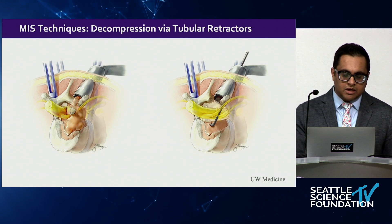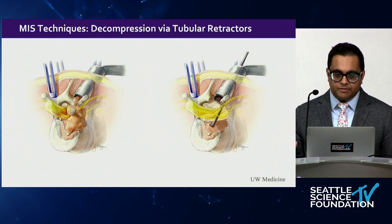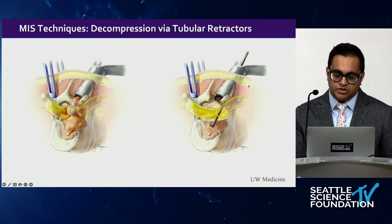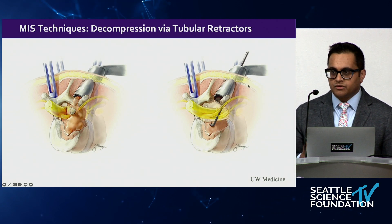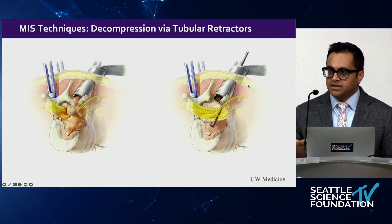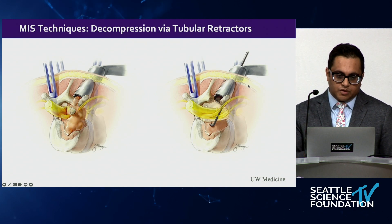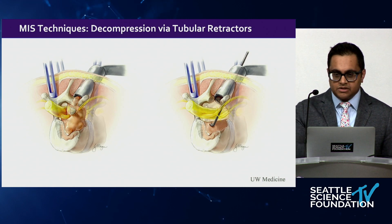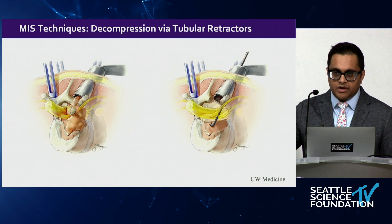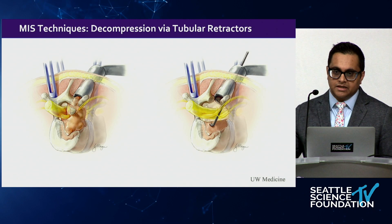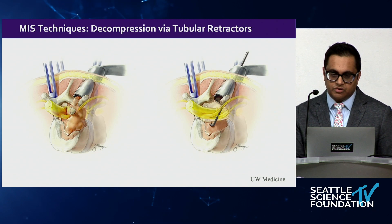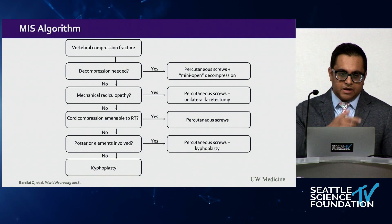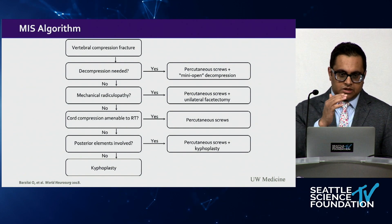For decompression in the lumbar area with unilateral pedicle involvement or nerve root compression, we use two tubular retractors—the same technique as a microdiscectomy. If you're familiar with an MIS TLIF, I've essentially adopted those techniques from the degenerative population to perform an MIS separation surgery. This algorithm, made by my mentors at Sloan Kettering, is what we use to determine if patients can fit an MIS procedure.